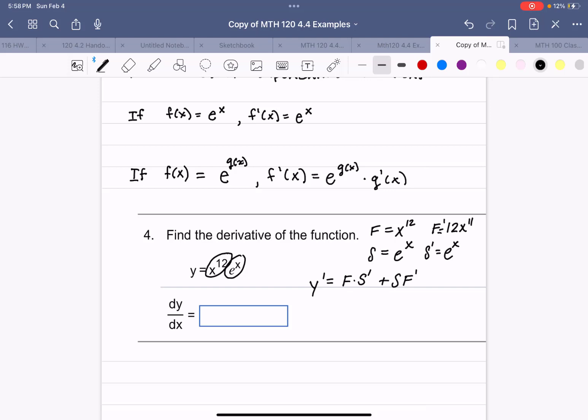So my formula here for dy/dx is going to be first x to the 12 times derivative of the second, e to the x, plus the second, e to the x, times the derivative of the first, 12x to the 11th.